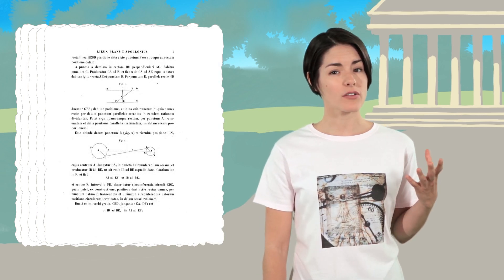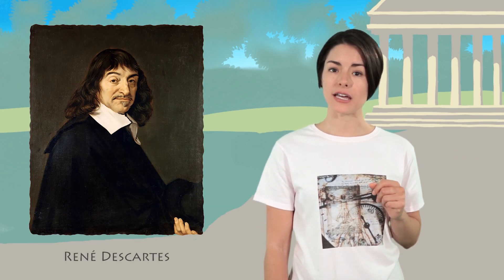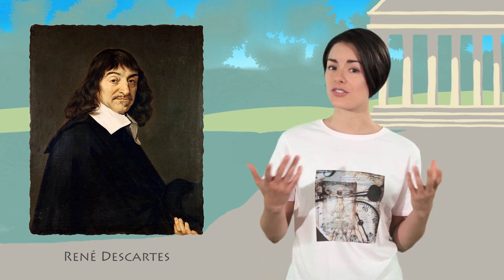Perhaps inspired by the work of Apollonius, Fermat went on to discover analytic geometry. René Descartes independently developed analytic geometry around the same time. Because Descartes published his ideas, he's frequently given credit.